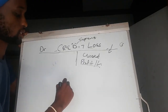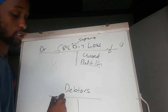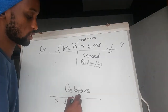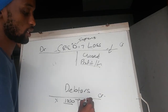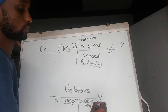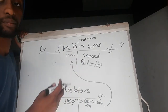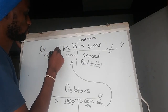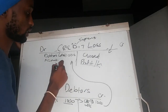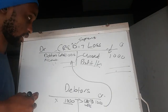So if we have a debtor's control account, and Debtor X owes us 1,000, then all of a sudden Debtor X can't pay, we have to move that 1,000 to the credit side of the debtor's control, creating what is called a credit loss of 1,000. That 1,000 is then moved and put in the credit loss account on the debit side, coming from the debtor's control account. At the end of the year we close it off to the profit and loss account.